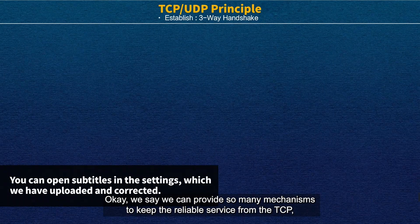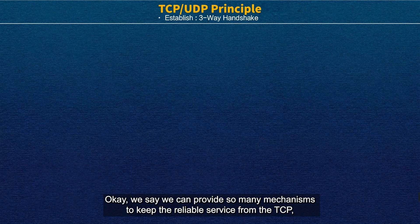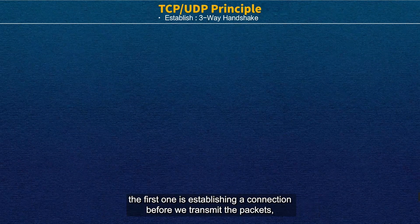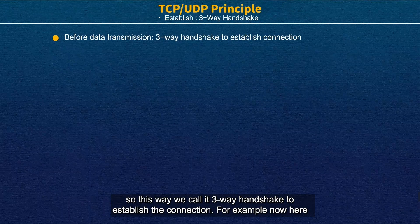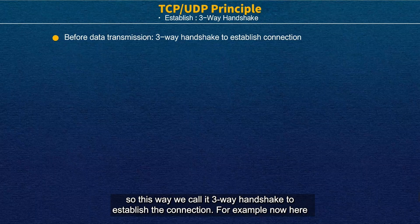We can provide so many mechanisms to keep the reliable service from TCP. The first one is to establish the connection before we transmit the packet. This way we call it 3-way handshake to establish the connection.